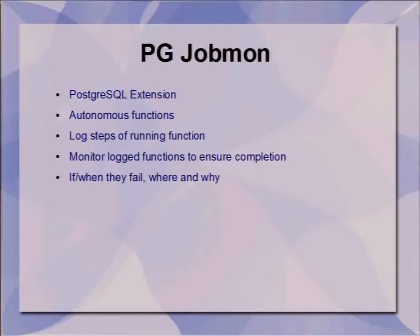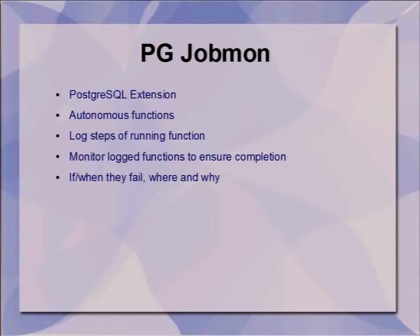This allows you to log individual steps of a function using a dblink trick. dblink is another extension that lets you connect to another Postgres database. You use dblink to connect back to the same database, creating individual sessions that are individual transactions which can be committed. This does add a little bit of overhead, but usually for the functions we're running the overhead is negligible, and the monitoring value is much more important.